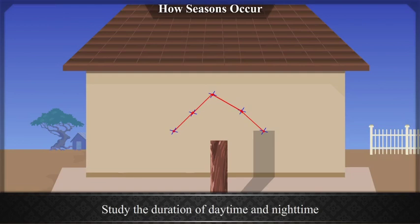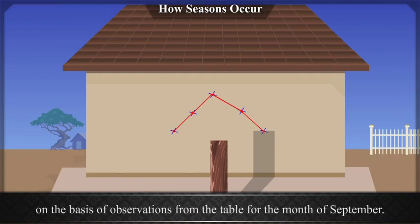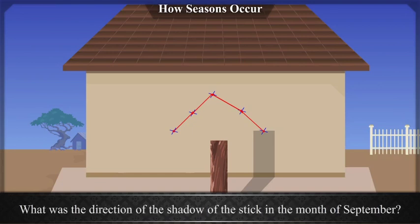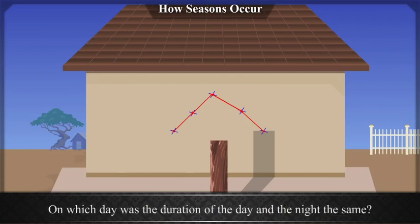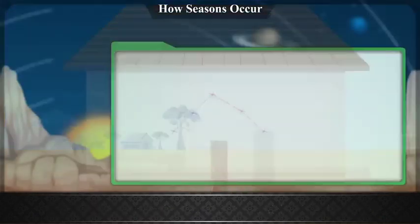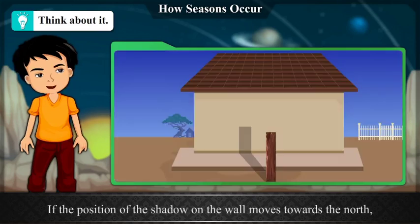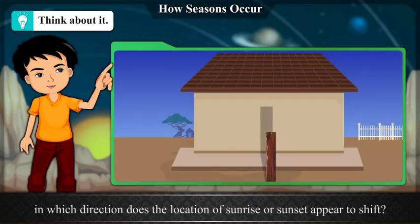Study the duration of daytime and nighttime on the basis of observations from the table from the month of September. What was the direction of the shadow of the stick in the month of September? On which day was the duration of the day and the night the same? Think about it: if the position of the shadow on the wall moves towards the north, in which direction does the location of sunrise or sunset appear to shift?